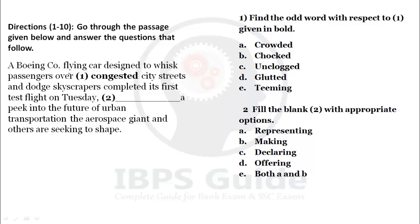A Boeing Corporation flying car designed to whisk passengers over congested city streets and dodge skyscrapers completed its first test flight on Tuesday, dash a peak into the future of urban transportation. Question one: find the odd word with respect to the word given in bold. We have to find the odd word — meaning here we have to give the antonym, not a synonym, for 'congested'.